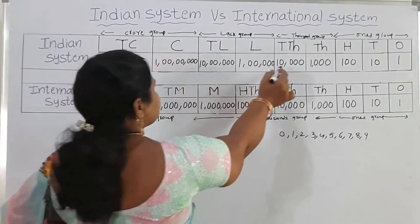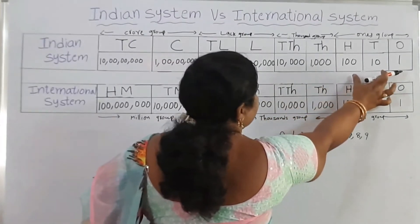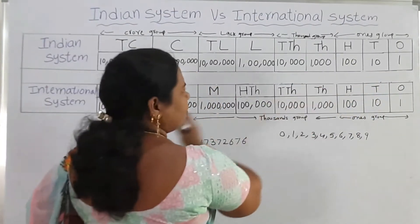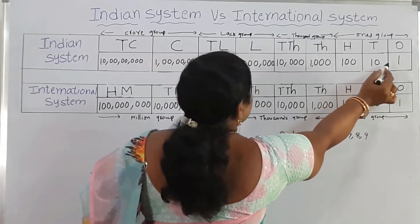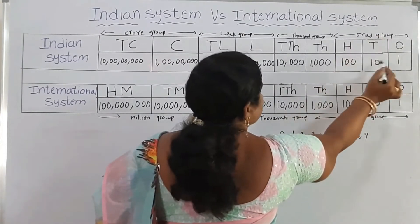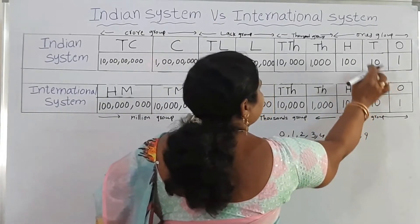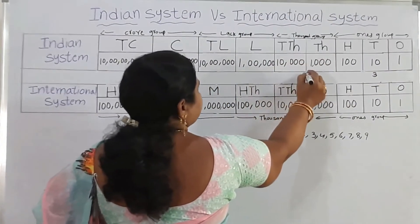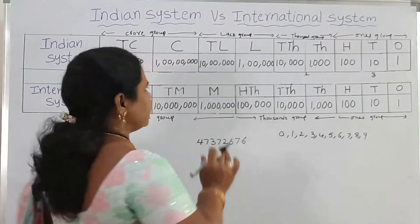Here, this is the Indian system of numeration. In the Indian system, we divide all the groups from right to left. In this group, there are 3 places — we divide the first group. Next, 1,000 and 10,000 — these 2 places form the next group.